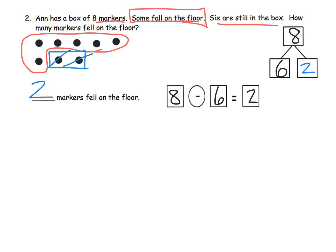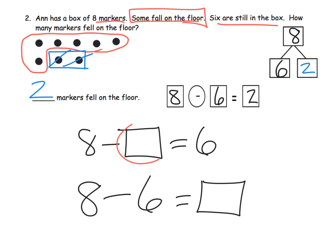Now, parents and teachers, it's important to know that if we were to model exactly as this problem was written, it would look like 8 minus box equals 6, because you have 8 markers, some fell on the floor, 6 are still in the box. But we want our students, our little first graders, to be solving it like 8 minus 6 is equal to the box, so we're going to find that unknown through subtraction.